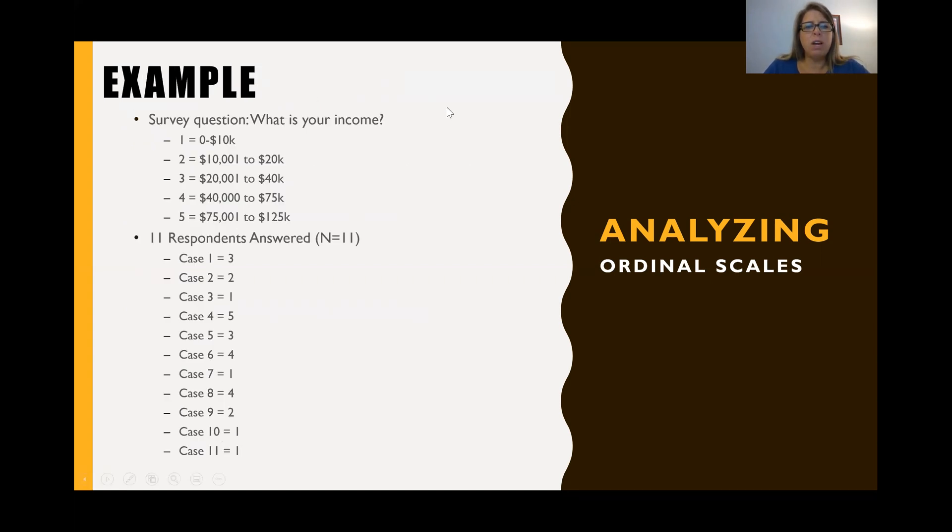Okay, so let's talk about an example. If we have the survey question, what is your income? And we have these categories of $0 to $10,000, which has a $10,000 grouping. And then we have $10,001 to $20,000. That's about a $20,000 window or grouping. $20,000 to $40,000, that's $20,000. $40,000 to $75,000, that's a different amount. And as you can see, all of these have different unequal groupings, which makes an ordinal variable.